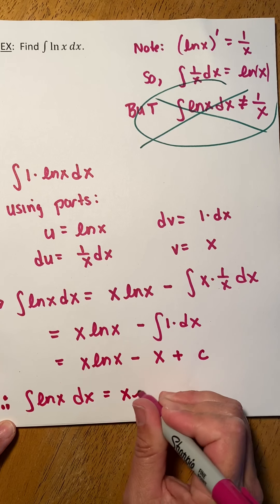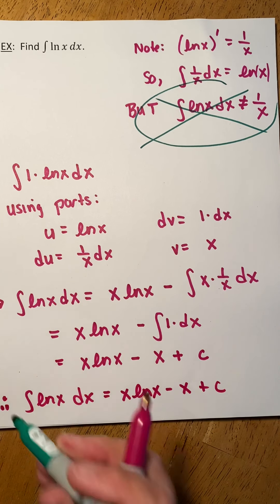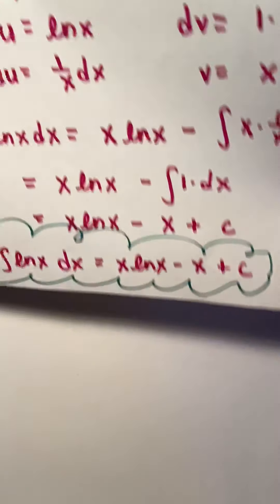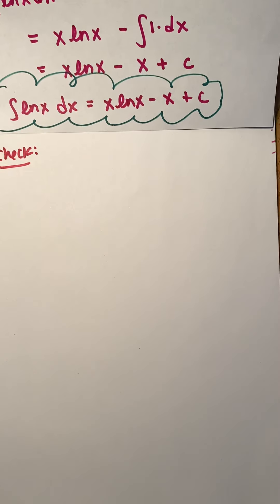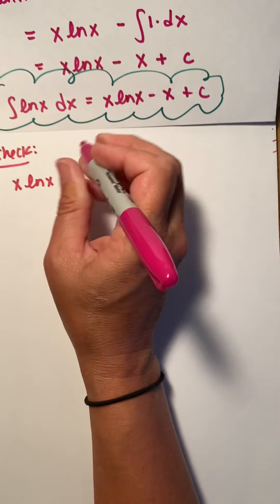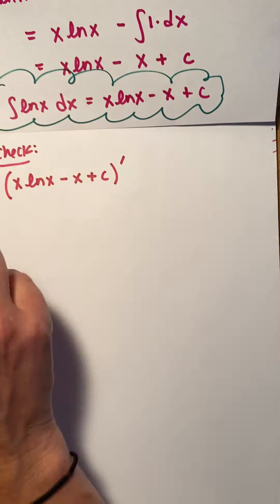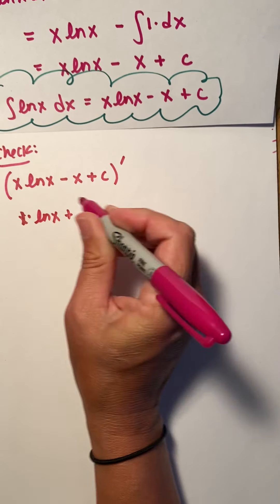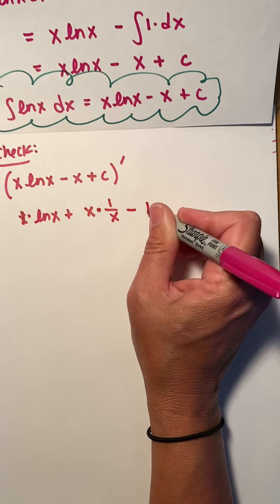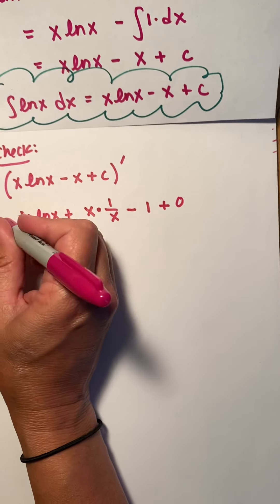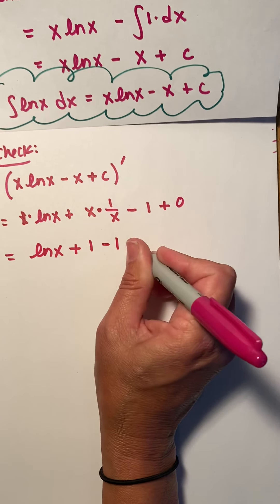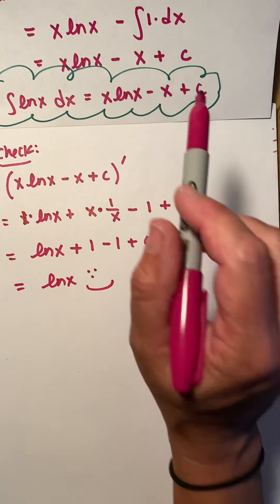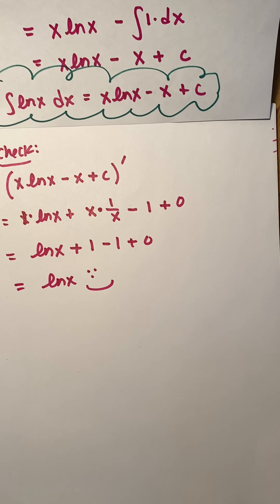So the antiderivative of ln(x) is x·ln(x) − x + C. Put this in your notes. We can verify: the derivative of x·ln(x) − x + C, using the product rule, gives ln(x) + x·(1/x) − 1 + 0 = ln(x) + 1 − 1 = ln(x). This confirms our answer. You can now accept it as fact: the antiderivative of ln(x) is x·ln(x) − x + C.